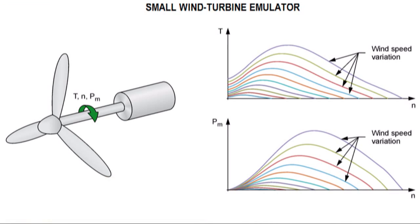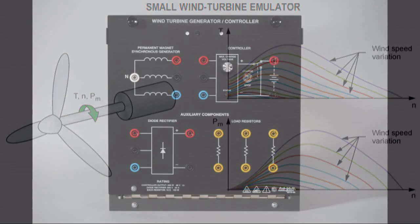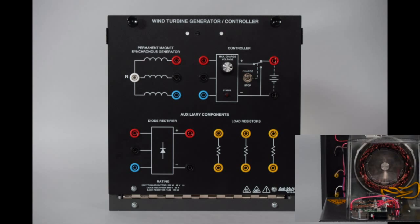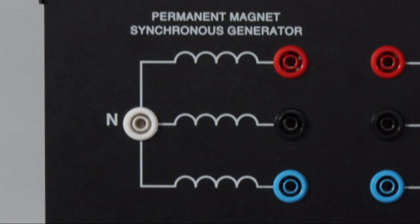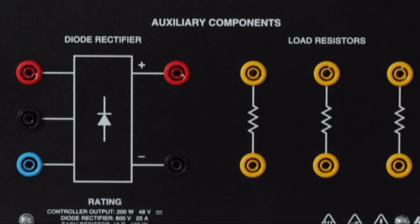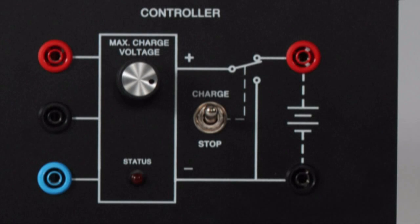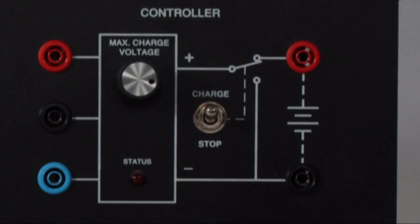This is something that a standard motor and drive simply cannot achieve. The wind generator module features a permanent magnet synchronous generator and resistive loads to study the generator characteristics in AC or DC. The battery charge controller automatically protects the turbine in case of wind overspeed or when the batteries are fully charged.